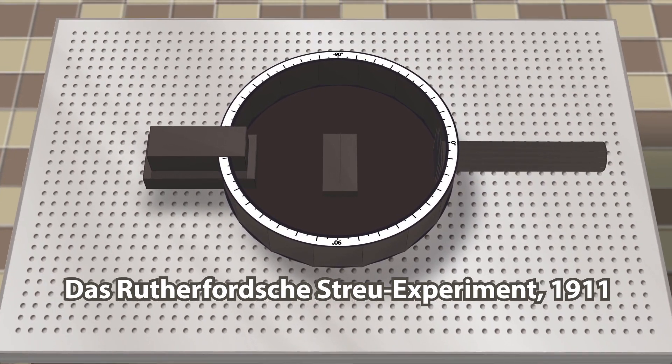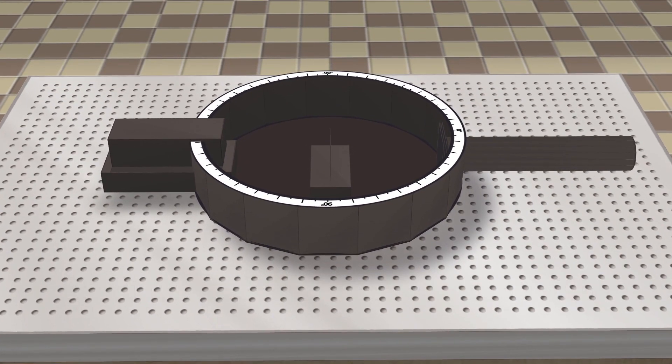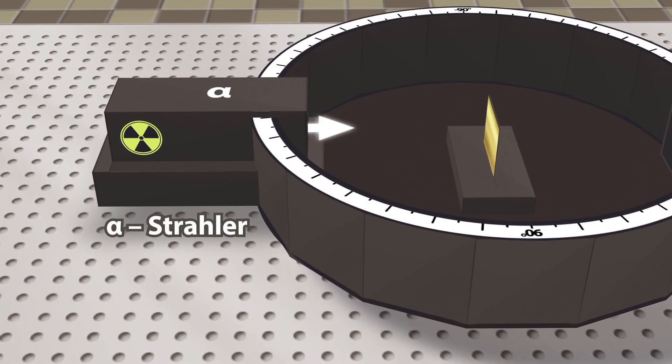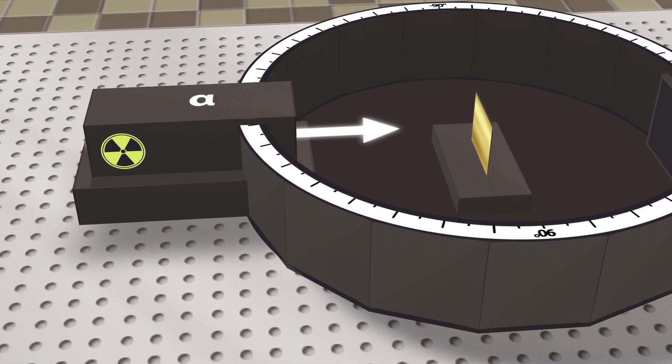The ingenious experiment of Rutherford was essential for finding the answer. Radioactivity had just been discovered, and Rutherford could use an alpha-emitter, that is, fast atomic nuclei of helium, which are emitted by radioactive radium.